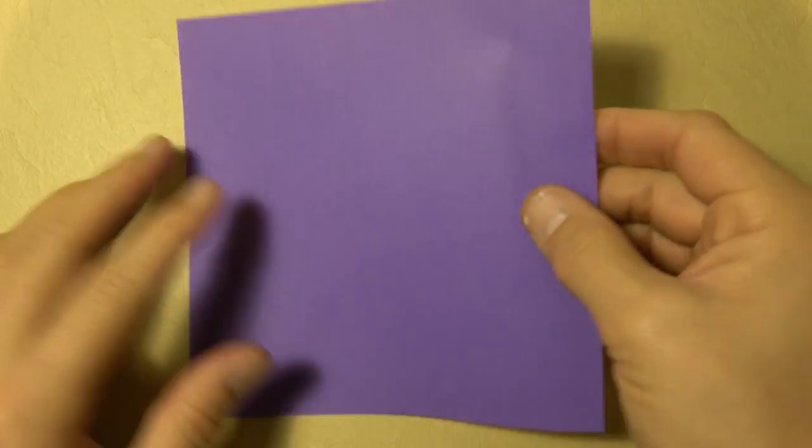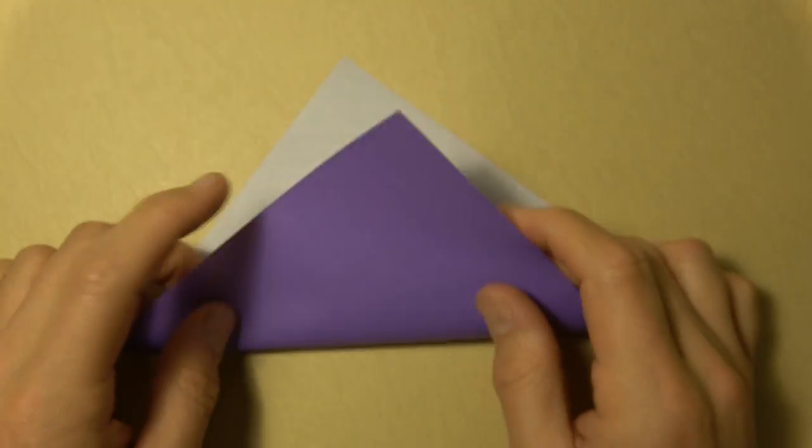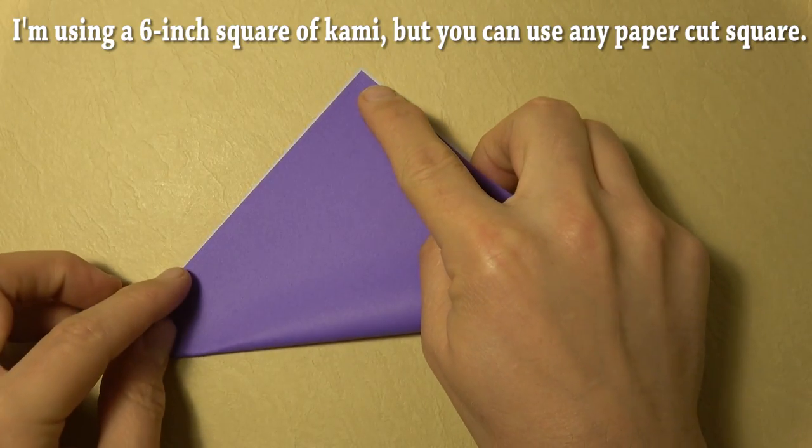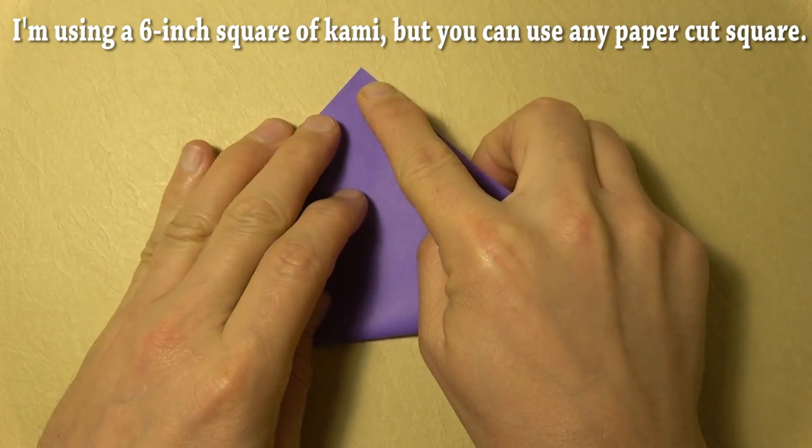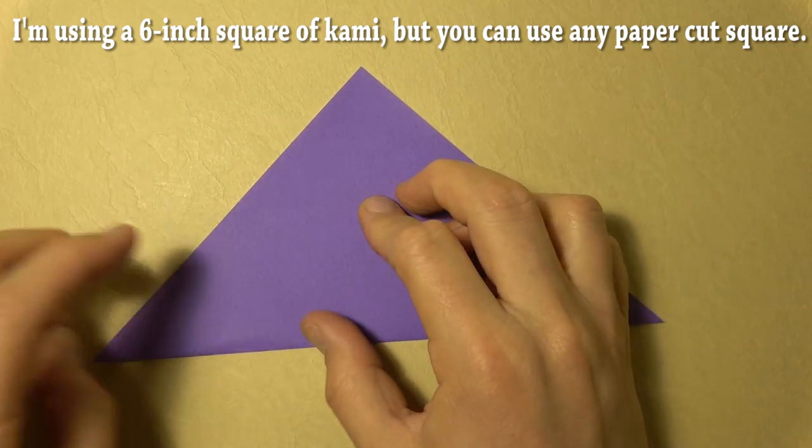Want to learn how to fold it? Ready, set, here it goes. Okay, let's begin white side up and let's fold diagonally in half. We're making a waterbomb base. Try to make really precise folds and crease sharply.